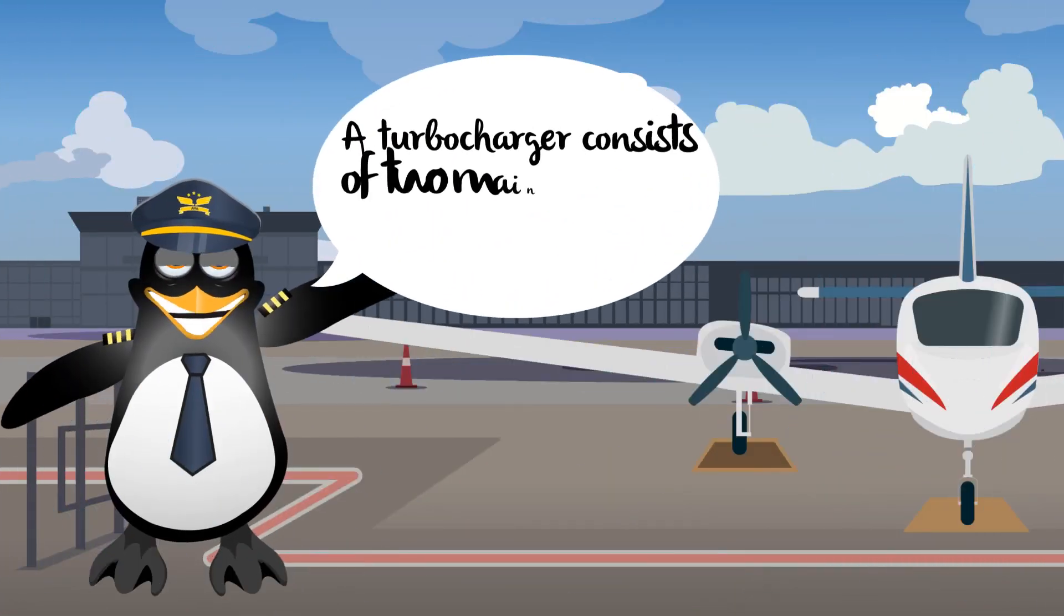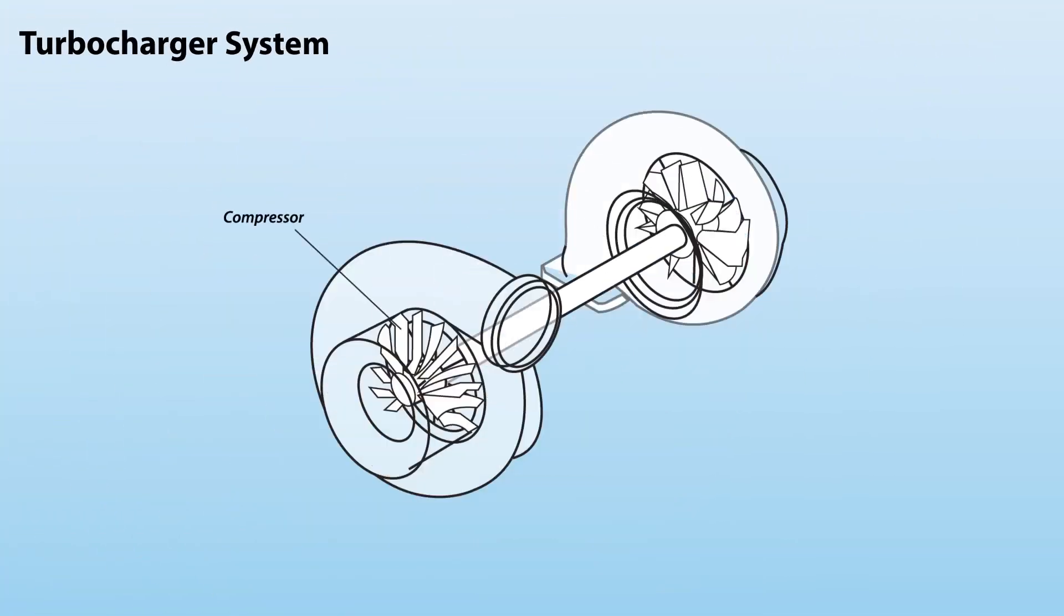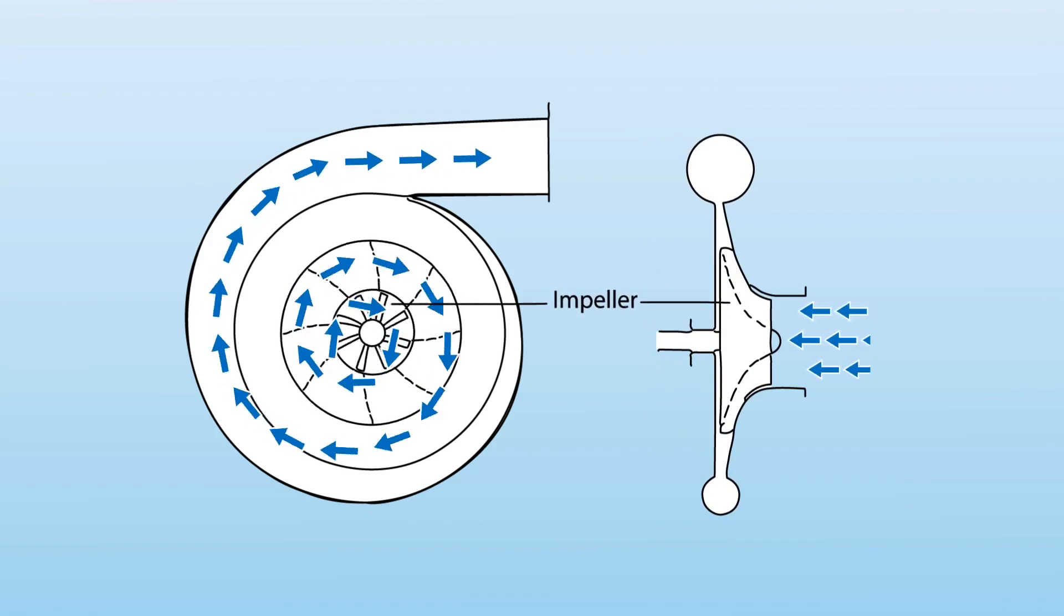A turbocharger consists of two main elements, a compressor and a turbine. The compressor houses an impeller that turns at a high rate of speed. As intake air is drawn across the impeller blades, the impeller accelerates the air, allowing a large volume of air to be drawn into the compressor's housing. The impeller's action subsequently produces high-pressure, high-density air that is delivered to the engine.